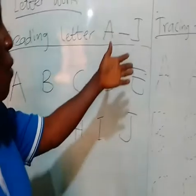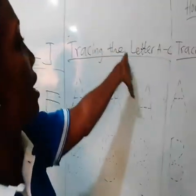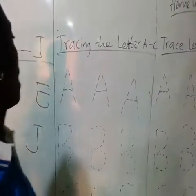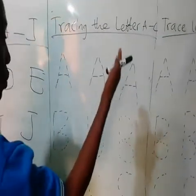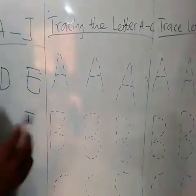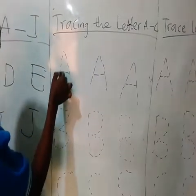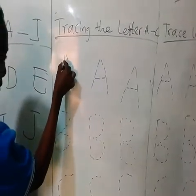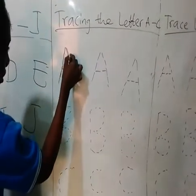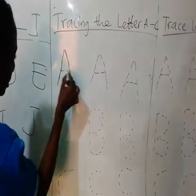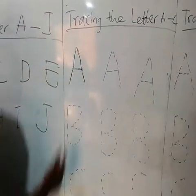The second one with me here is tracing the letter A to C. How are we going to trace letter A to C? Look at it very well. Number one, you have to stroke it like this. You stroke it like this. Stroke the second one like this, then put dash. Make it letter A.